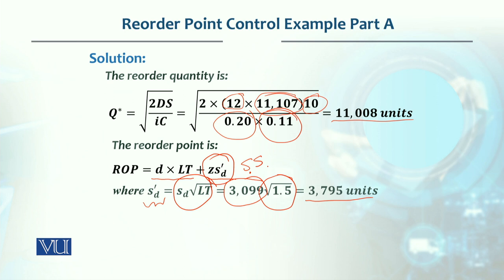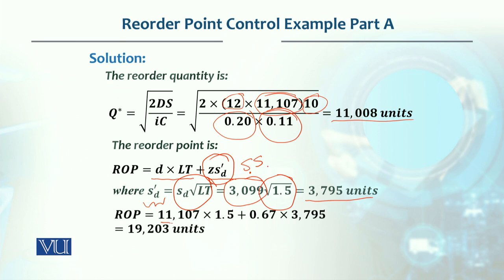Now we use this to find the reorder point. Monthly demand of 11,107 units multiplied by lead time of 1.5 months gives demand during lead time. The next step is to find the safety stock. In this case, Z is 0.67 — from the table, for 75% in-stock probability, Z value is 0.67. This is multiplied by 3,795 and added to demand during lead time. The resulting reorder point is 19,203 units.